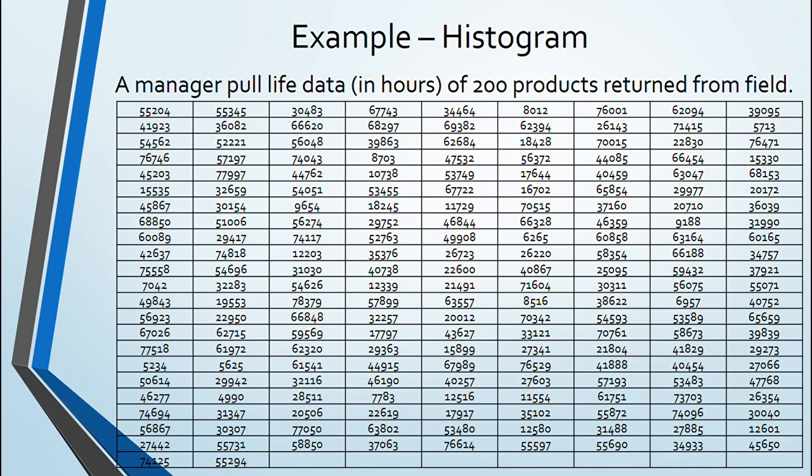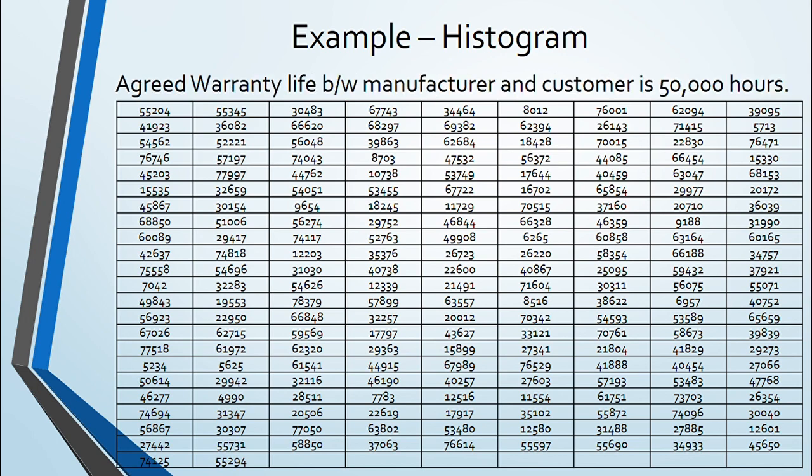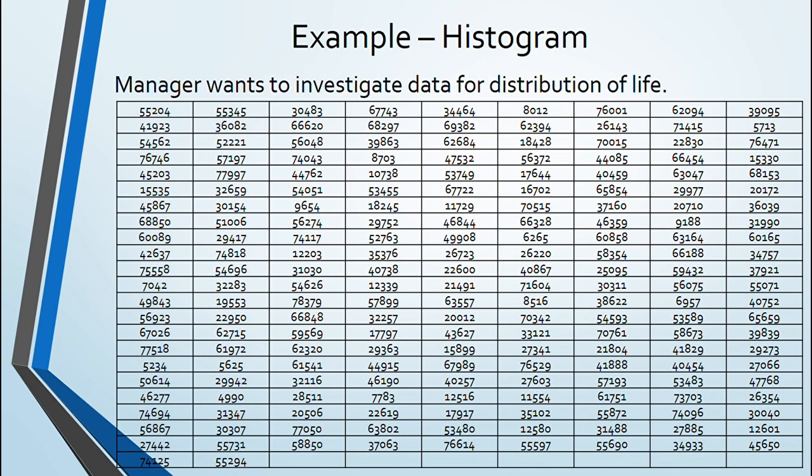He know that agreed warranty life is 50,000 hours. It helped him to create bin or interval to study this data distribution. He created a bin of 5000 hours and mapped data of 200 products on it.